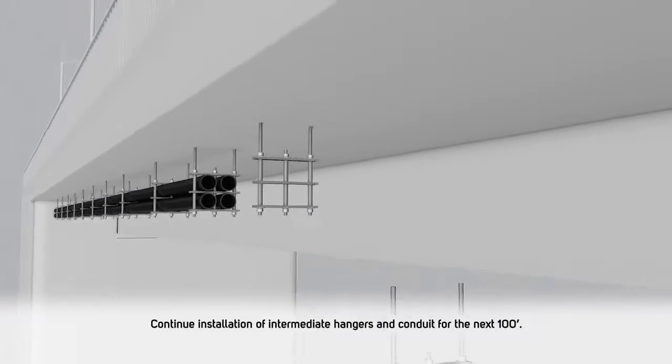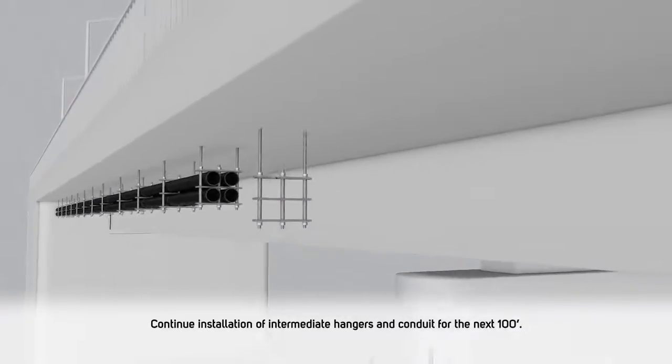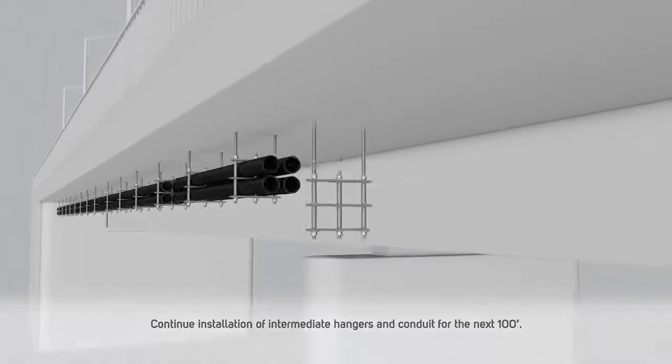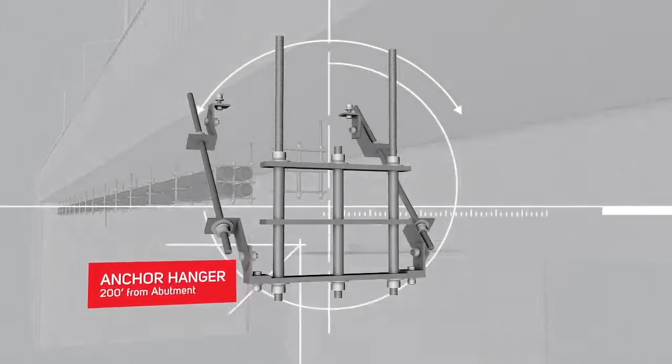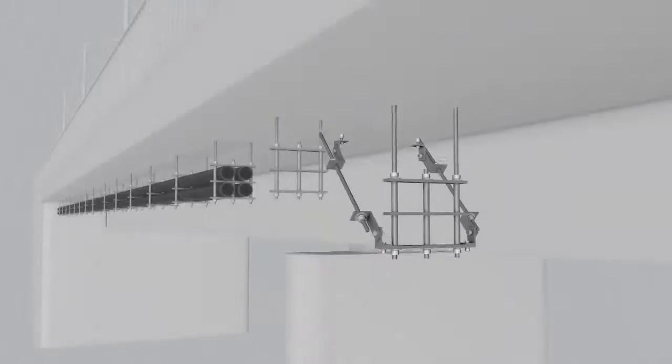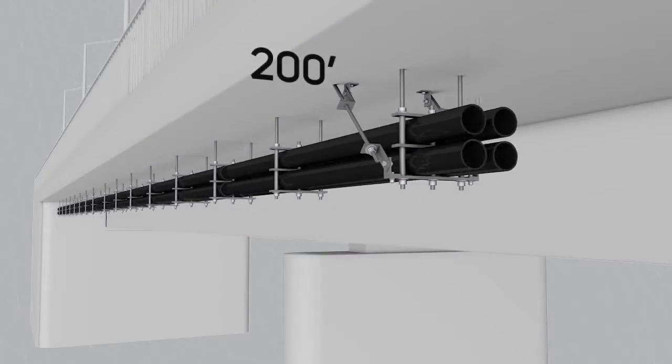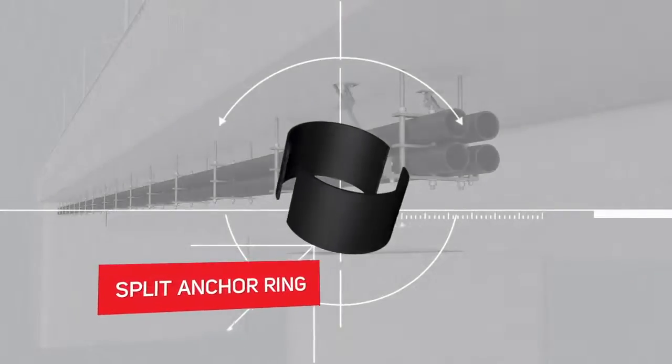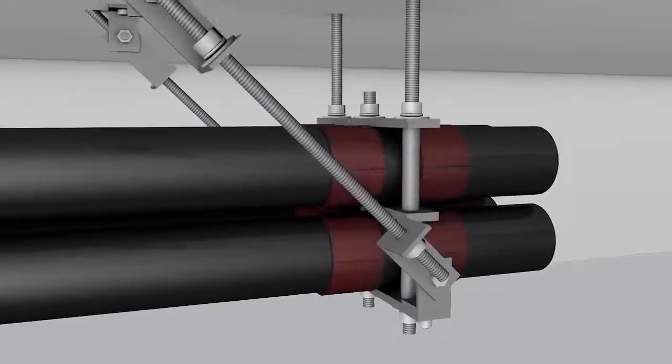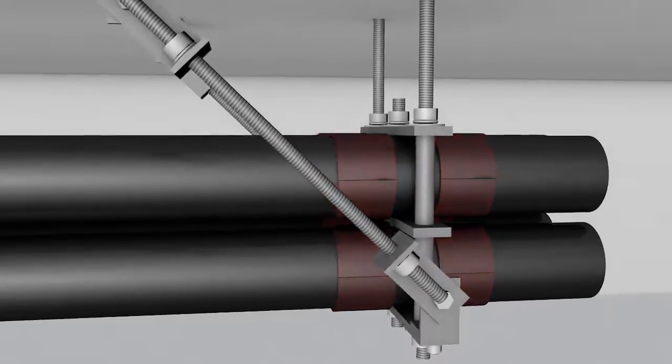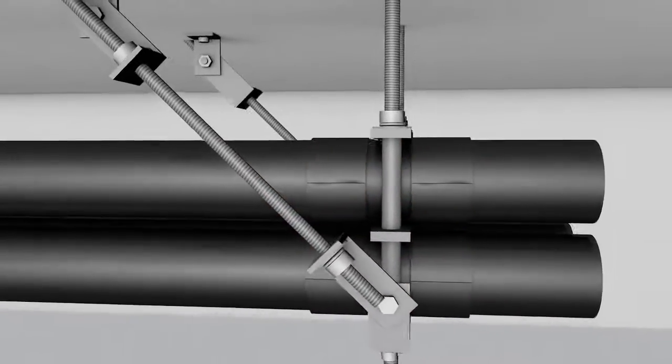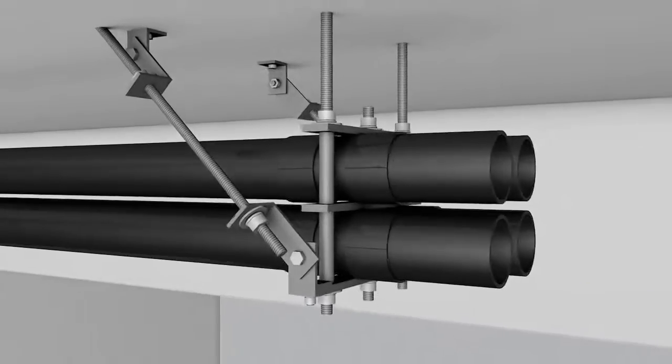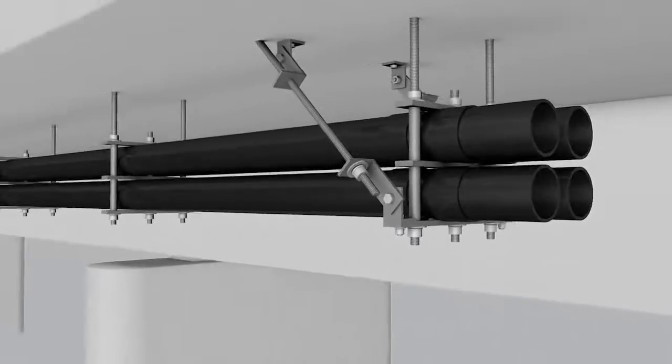Continue installation of intermediate hangers and conduit until the 200-foot mark is hit. At the 200-foot mark create a fixed point using an anchor hanger. In this demonstration a standard 45 degree angle brace is used. For other angles please consult with Champion Fiberglass. Split anchor rings are applied on each side of the anchor hanger to fix the conduit. Apply epoxy adhesive on the inside of the split anchor rings and snap them to the outside of the conduit. The split anchor rings are installed tight towards the bridge hanger leaving no room for movements.